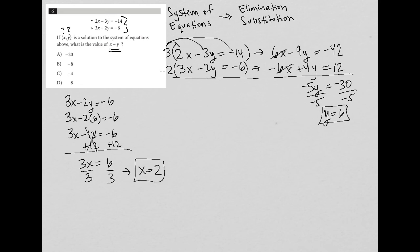So now I have X is 2, Y is 6. So X minus Y, which is what the question asked me to find, is just going to be 2 minus 6, which is equal to negative 4, which is answer choice C.